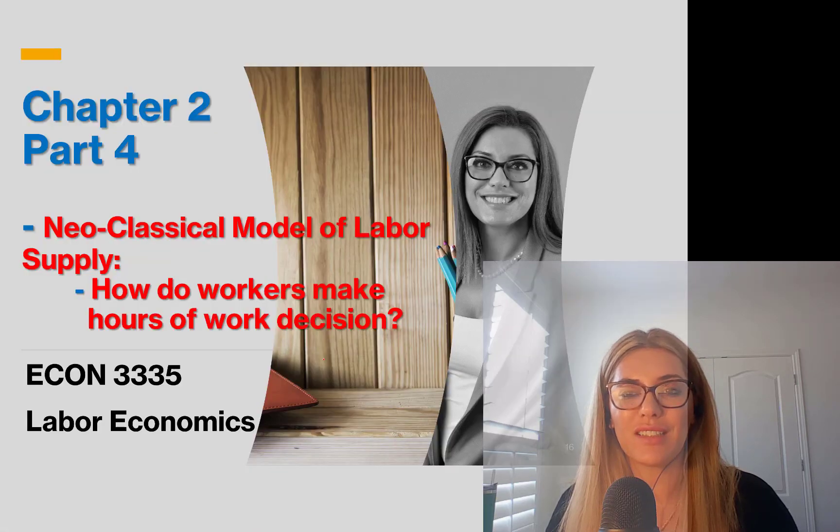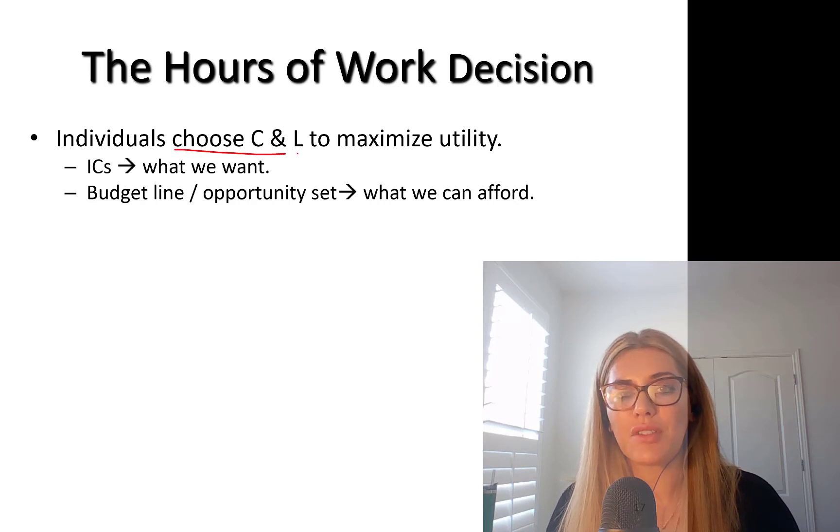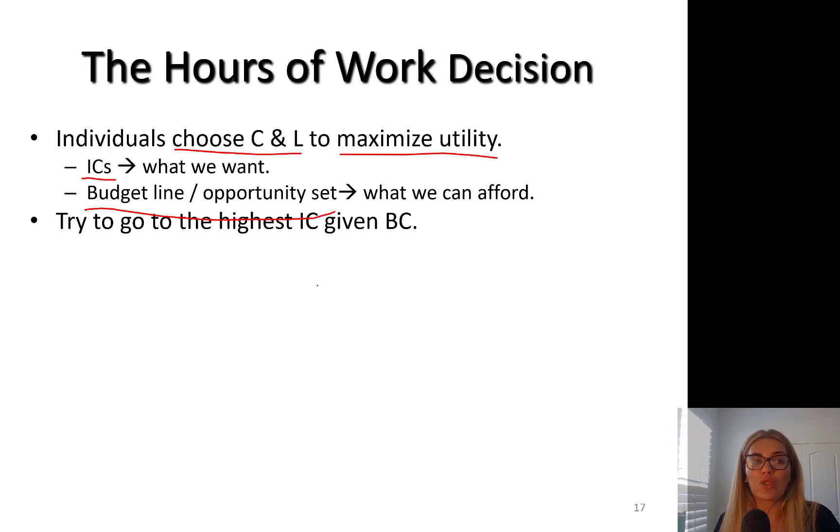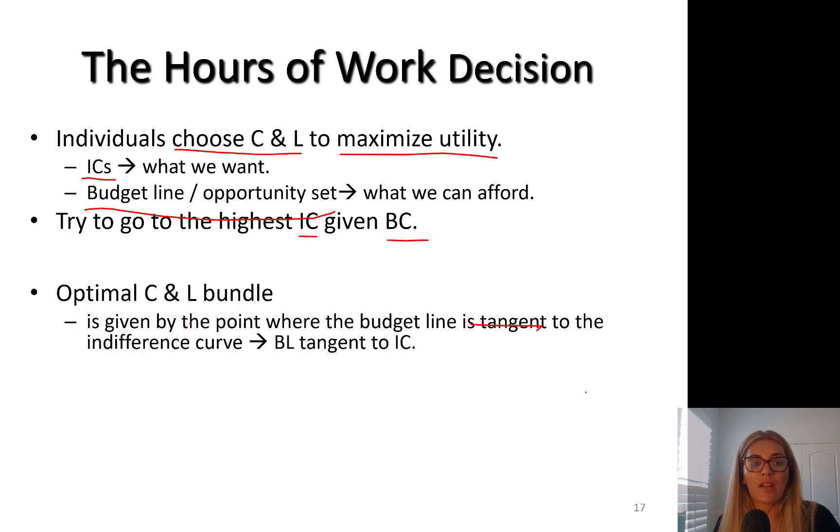We are putting indifference curves together with the budget constraint. Individuals choose consumption and leisure to maximize their utility. They're trying to reach the highest utility indifference curve with the given budget line. Indifference curves show us what we want - more consumption, more leisure. However, budget line brings reality - it's the opportunity set showing what we can afford. You're trying to go to the highest indifference curve given your budget constraint.